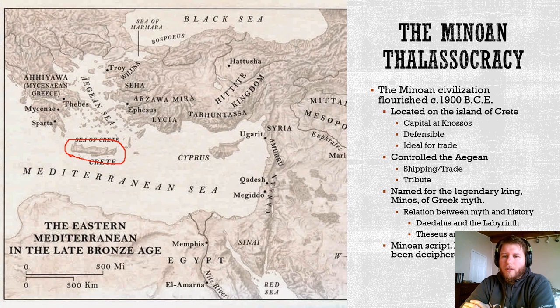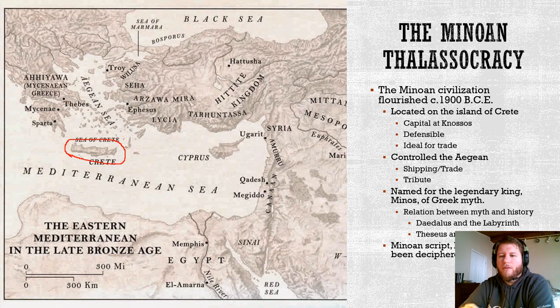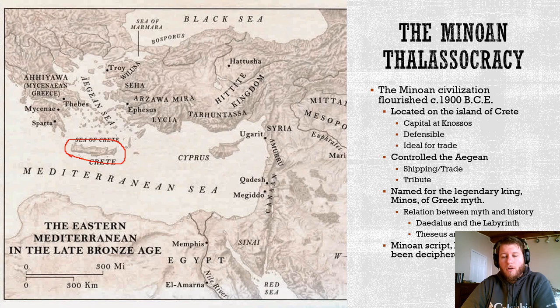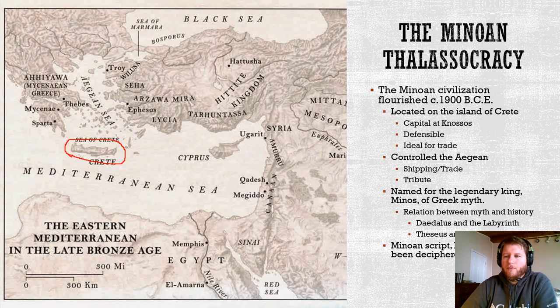The palace complex at Knossos is incredibly large and labyrinthine in description. There is also a lot of religious significance given to bulls in Minoan culture, which we'll look at in a moment. The Minotaur — the half-man, half-bull creature — could have some connection to their religion. Not that a Minotaur was running around the island of Crete, but the sacredness placed on bulls in ancient Minoan culture could have been a tie-in there in some form.